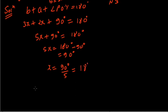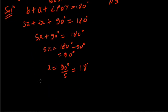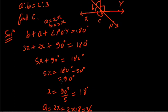Now we have to find the value of C. First, we find A and B. As A equals 2x, A equals 2 into 18, that is 36 degrees. And B equals 3x, so B equals 3 into 18, that is 54 degrees. The value of A is 36 and the value of B is 54. Now we have to find angle C.